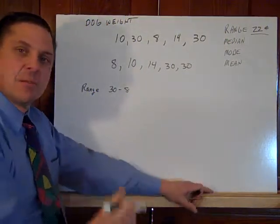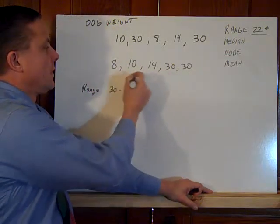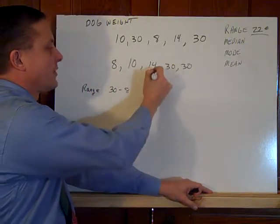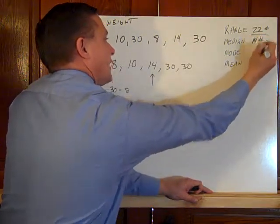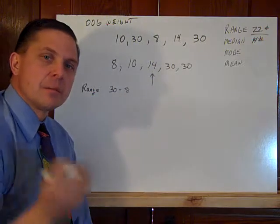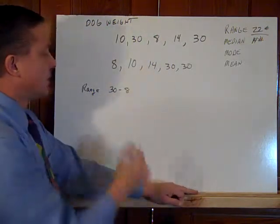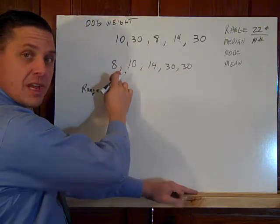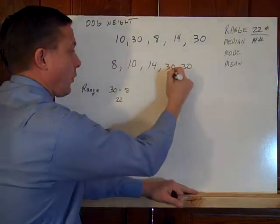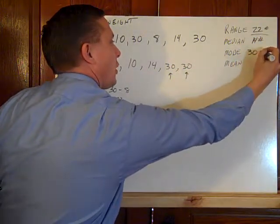The median is the middle of the set. You notice it's the middle once it's put in order. There are five numbers, so the middle number in this set is 14 pounds. The mode is the most common number. When we look at the set of five here, what's the number that happens the most often? Well, 30 happens twice. So the mode is 30 pounds.